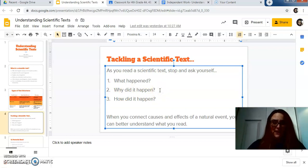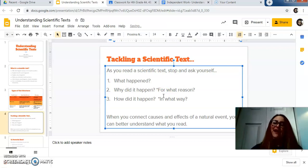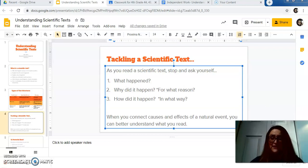So why, that's a good thing right on here, for what reason? And how, for in what way? So that's the difference between those questions. So what actually happened? What is the reason why it happened? And in what way did it happen? How did it happen? So when you connect these causes and effects to the natural event, you can better understand what you read. And it makes sense why those certain events happen.